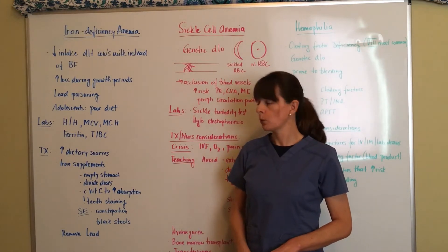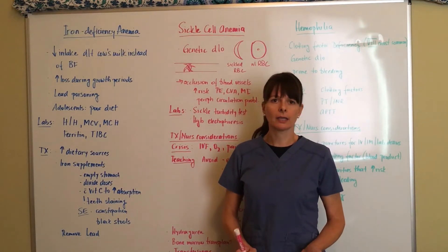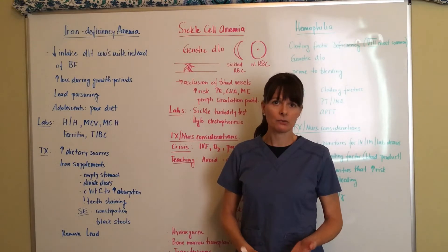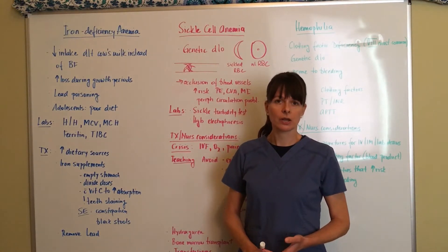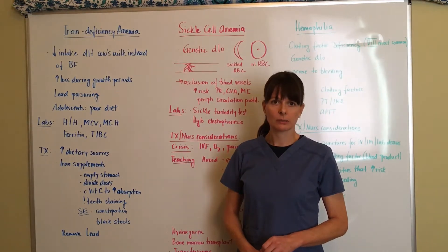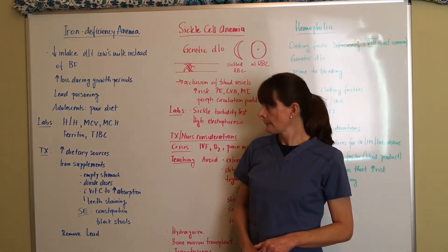Iron rich foods include beef, dark green leafy vegetables. For children, there are enriched rice cereals that are iron fortified. So those are some good options.